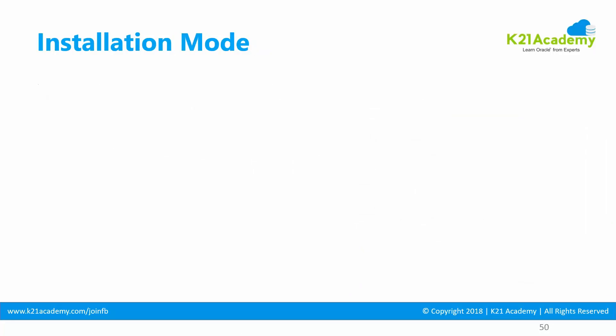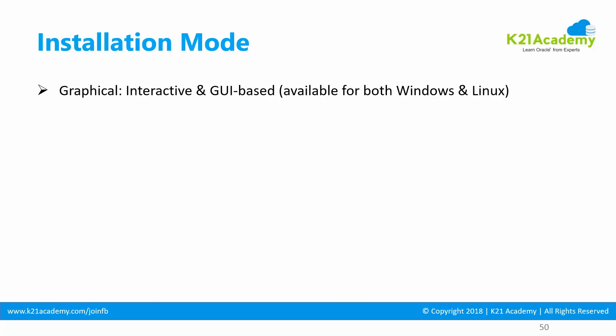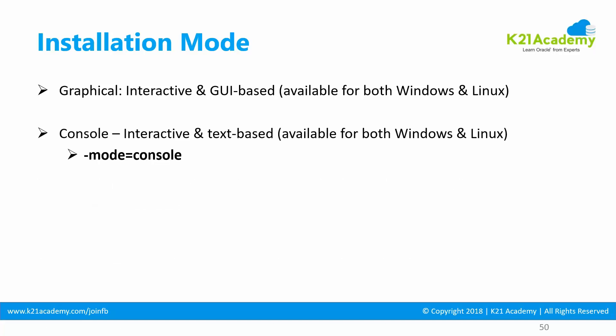That covers installation types. Now let's look at the installation modes. You can install using a graphical user interface (GUI), which is interactive and available on both Windows and Linux. Or you can use console mode, which is also interactive like the GUI.